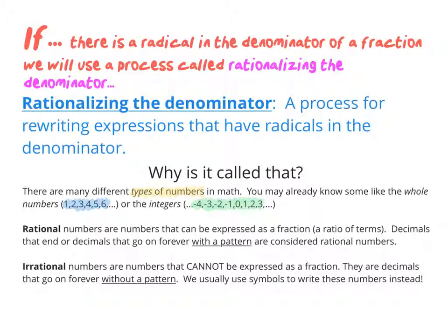There's a type of numbers in math called rational numbers. A rational number is any number that can be expressed as a fraction. So 3 halves is rational. The number 6 is rational, because I could write that as 6 over 1. Even some decimals are rational, like 0.5 — that's 1 half. Some decimals go on forever; 1 third is rational even though its decimal repeats, because it follows a pattern.